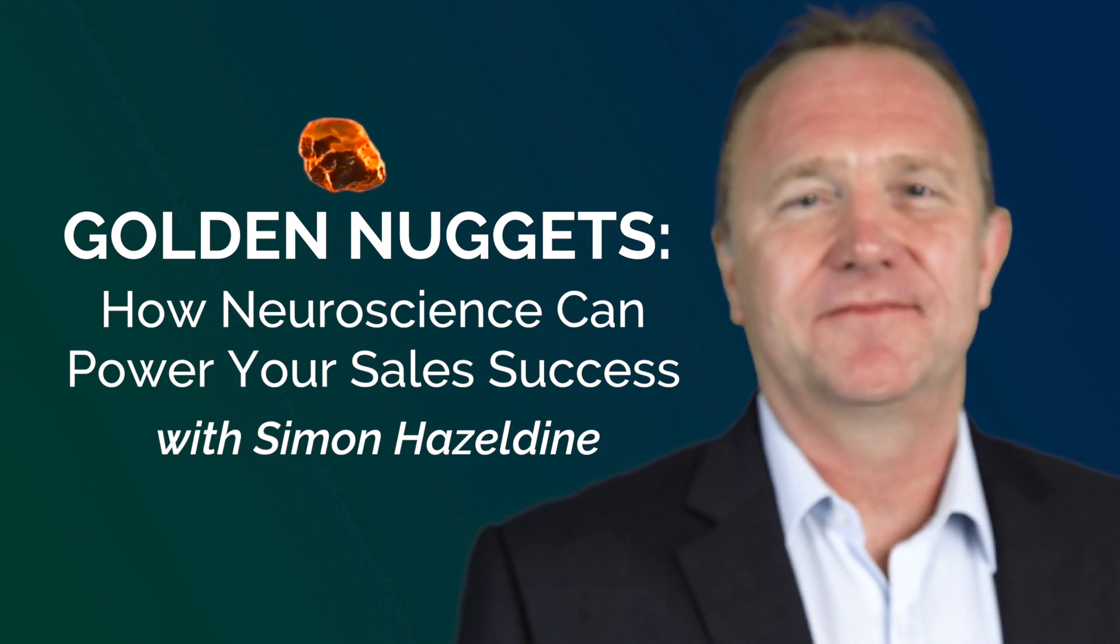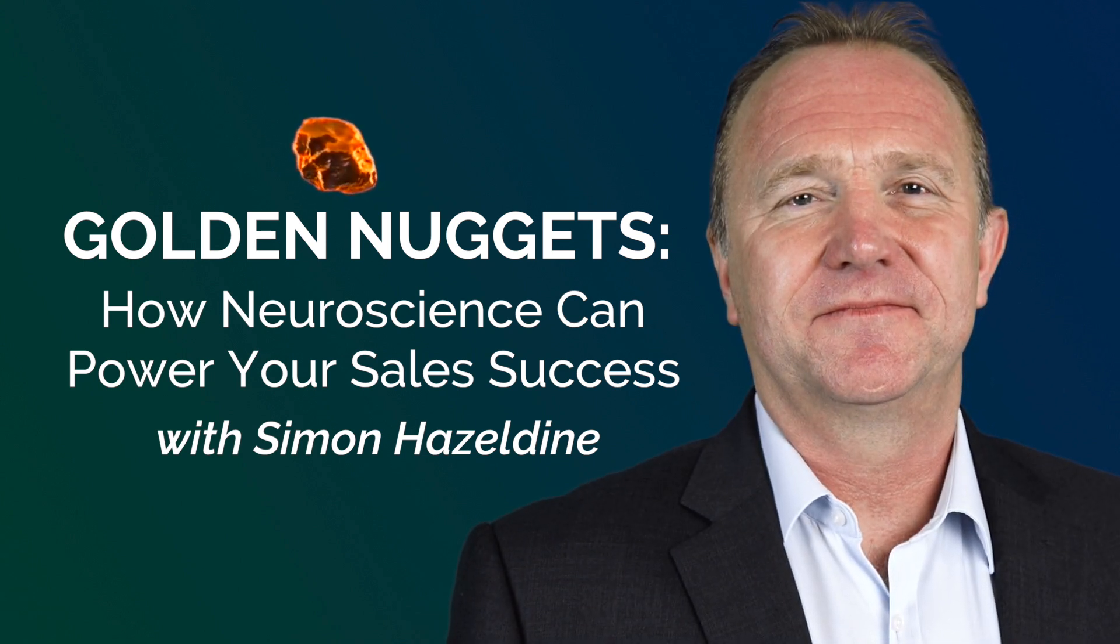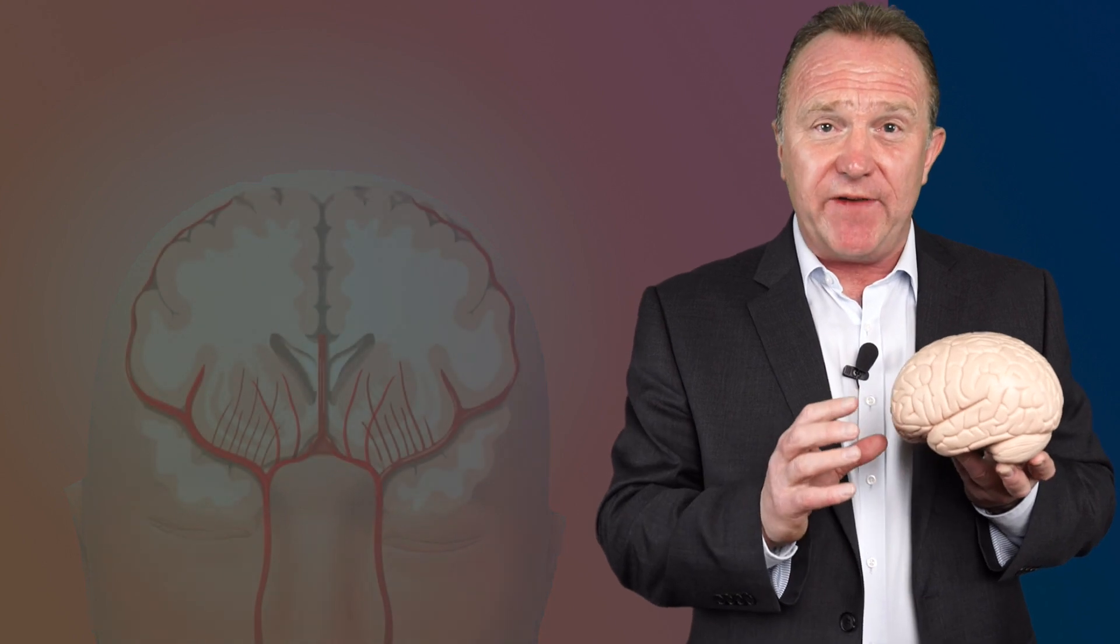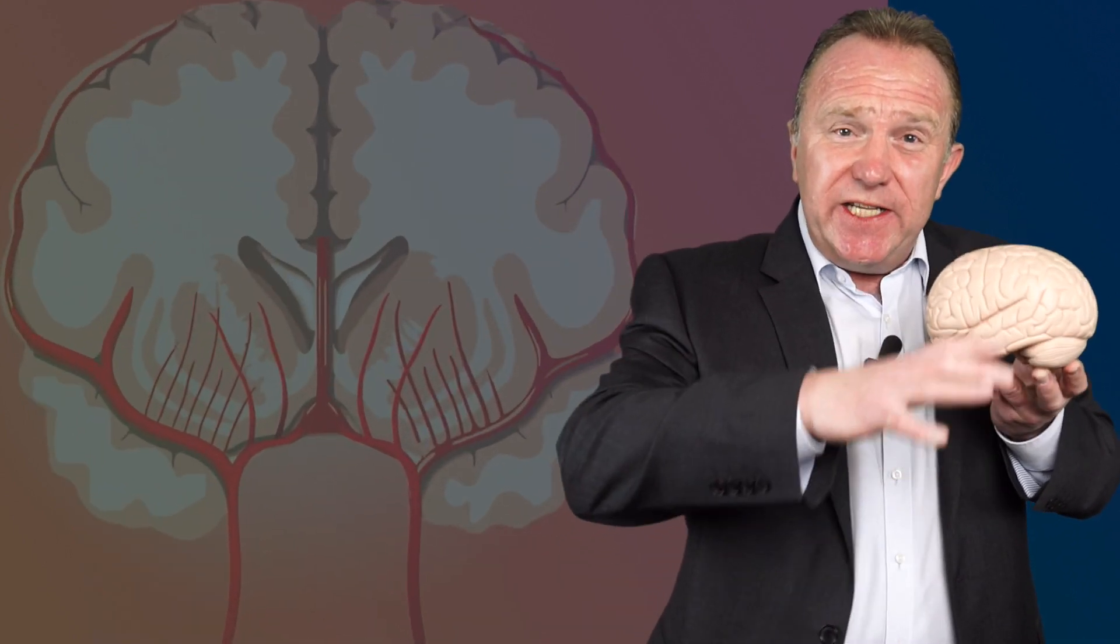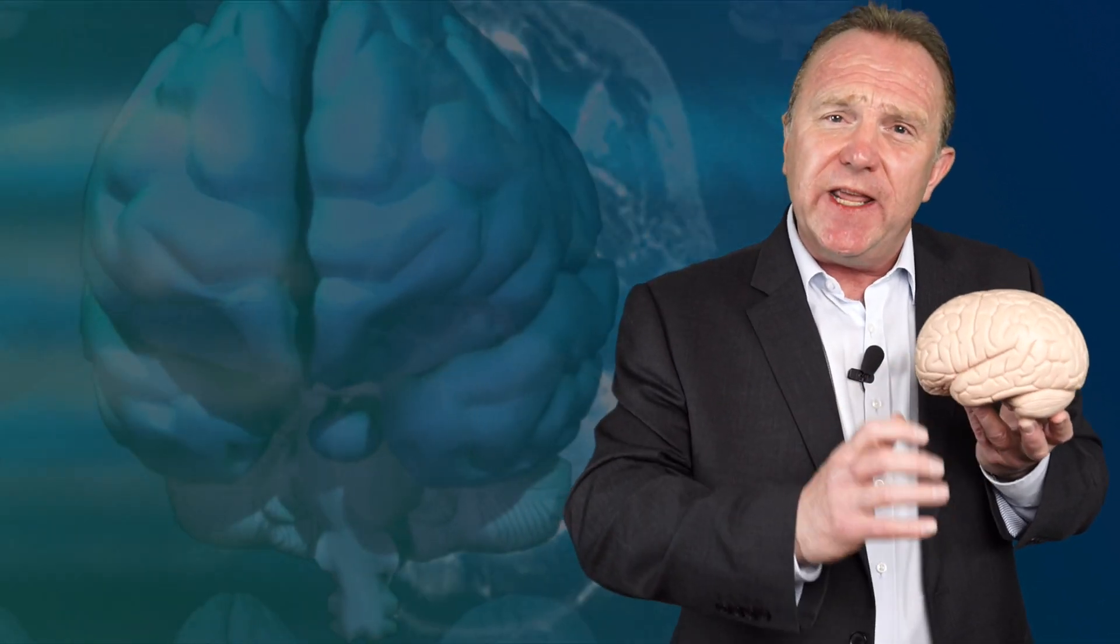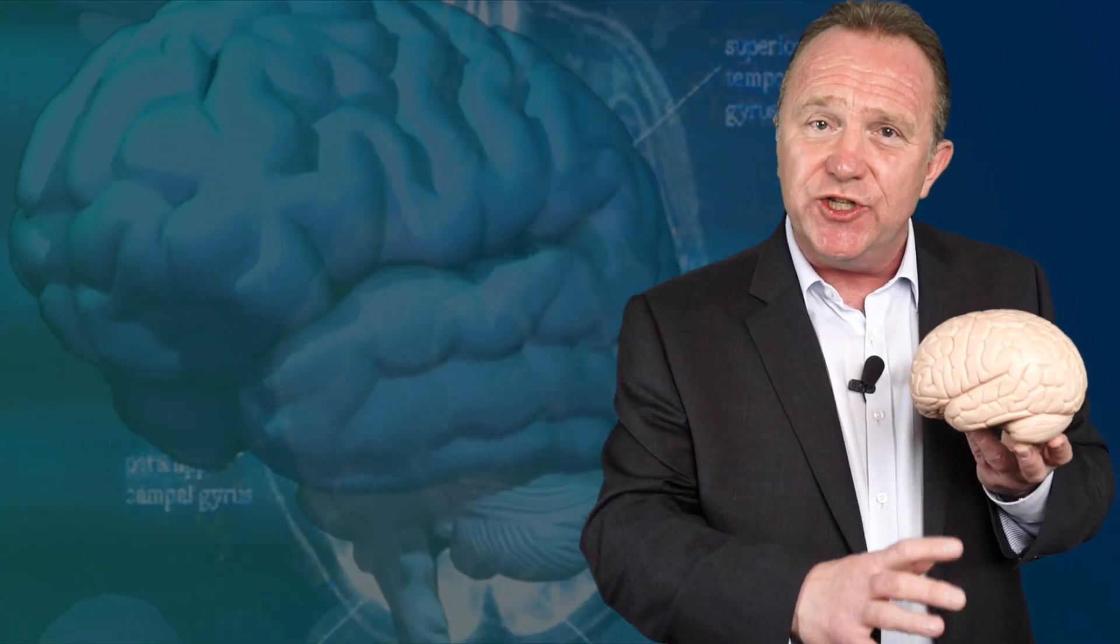Neuroscience research shows us that human beings are conscious of about 5% of their cognitive activity. That means that 95% of cognitive activity, decision-making actions and behavior are occurring in the more primitive and emotional regions of the brain.